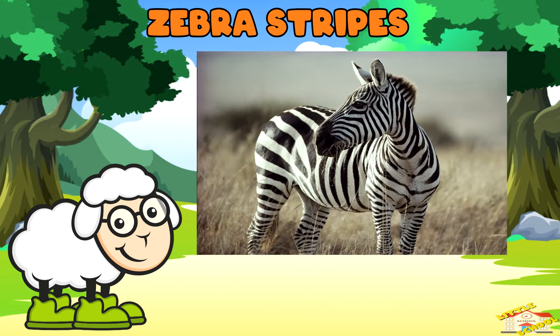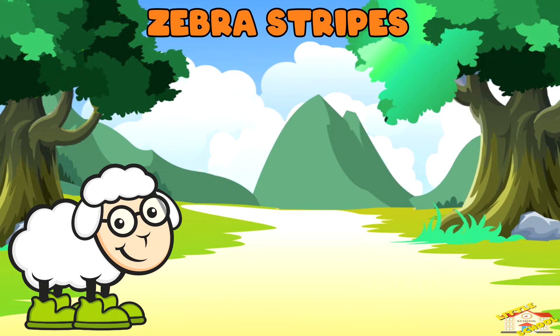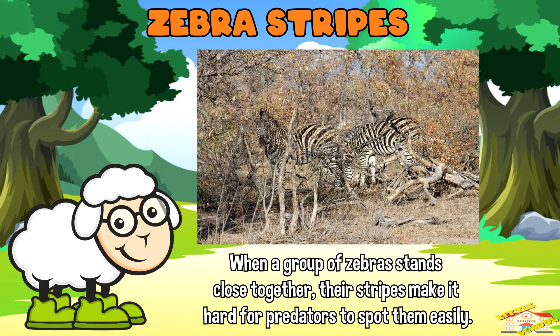Zebra stripes: the stripes of a zebra are actually their special camouflage. When a group of zebras stand close together, their stripes make it hard for predators to spot them easily.